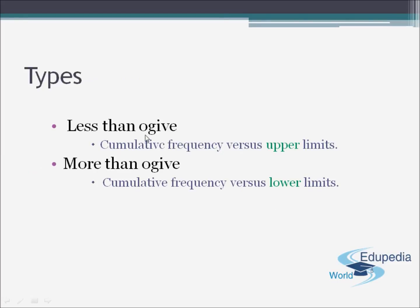Now we have two types of ogive. For the less than type ogive, cumulative frequency versus upper limits of the class intervals are drawn in a graph, whereas for the more than ogive, it is a graph of cumulative frequency versus the lower limits of the class intervals of the given data.